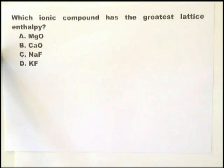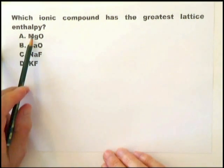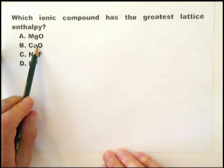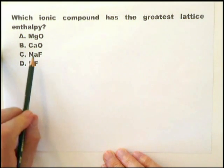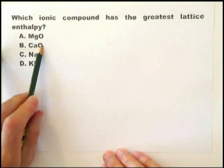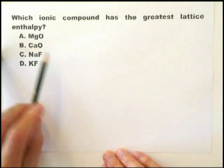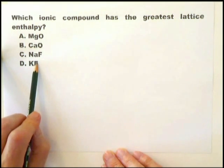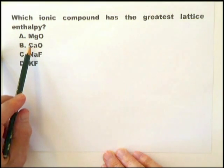When assessing which ionic compound has the greatest lattice energy, you're looking at two things, the ionic charge and the ionic radius. The first thing to look at is the ionic charge, because that has the greatest effect on the lattice enthalpy. And the larger the charge, the more the lattice enthalpy. So therefore, we can say that magnesium oxide and calcium oxide are going to have larger lattice enthalpy than sodium fluoride and potassium fluoride, simply because there's a 2 plus ion there, 2 minus ion there, a 2 plus ion there, and a 2 minus ion there. And those have the greater effect than the 1 plus ion, 1 minus ion, 1 plus ion, 1 minus ion. So that's the first thing. So the answer is either A or B.